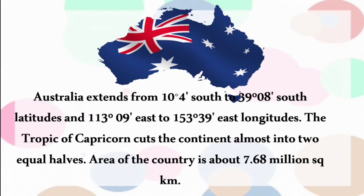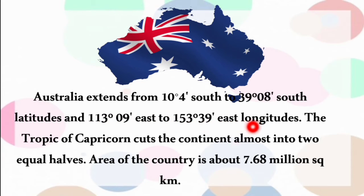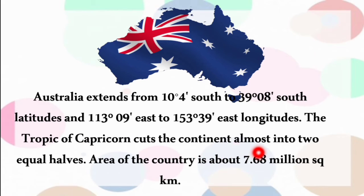Australia extends from 10°4' south to 39°8' south latitudes and 113°9' east to 153°39' east longitudes. The Tropic of Capricorn cuts the continent almost into two equal halves, and the area of the country is about 7.68 million square kilometers.